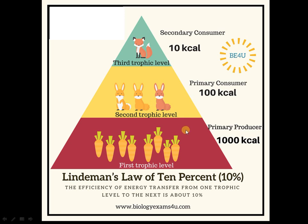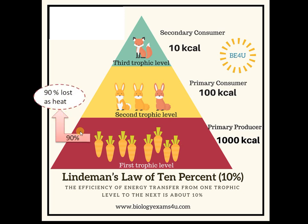According to Lindeman, only 10% of energy is transferred from one trophic level to the next trophic level. Suppose 1000 kilocalories of energy is fixed by green plants through photosynthesis at the first trophic level. 90% of that energy is lost as heat, used during metabolism, and lost through excretion.